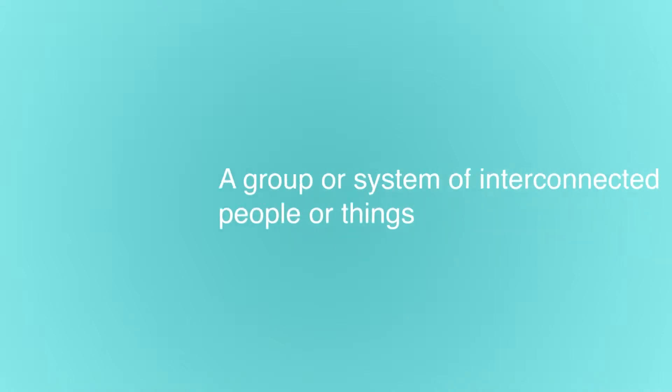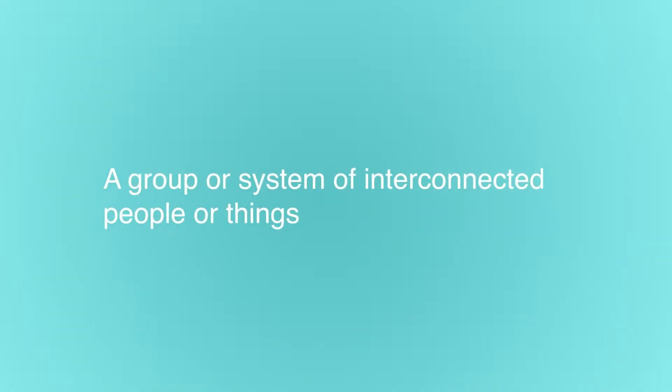A network is defined as a group or system of interconnected people or things, and therefore a computer network is a group of interconnected devices. We say devices instead of computers because some things, such as printers, are not computers but they are connected to a computer network.